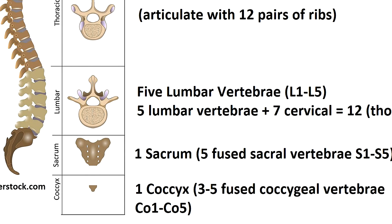Finally, you have the one coccyx bone, which consists of three to five fused coccygeal vertebrae abbreviated as CO1 through CO3, CO4, or CO5 depending on how many you have. This bone is also called the tailbone and it represents the terminal end of the vertebral column.